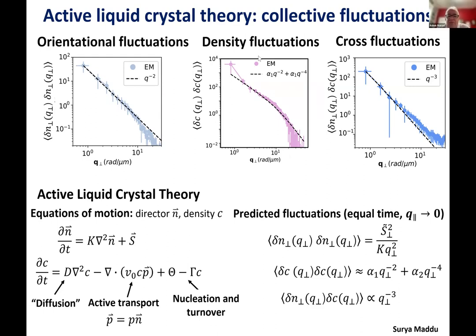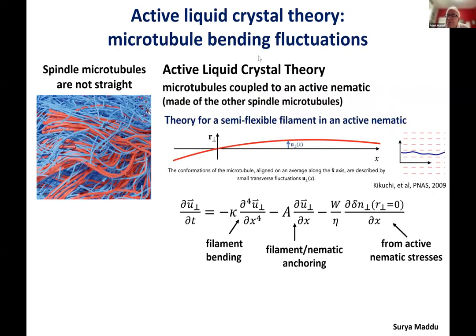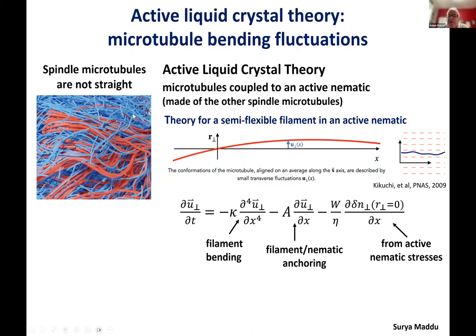Question: regarding bend fluctuations versus nematic director fluctuations — aren't they kind of similar? They are different things. You could have a bunch of short filaments, always perfectly straight, yet still have director fluctuations. So those phenomena are connected, but conceptually they're really different things.